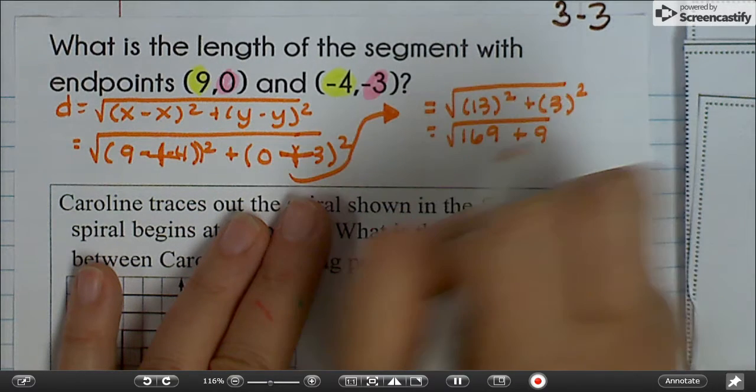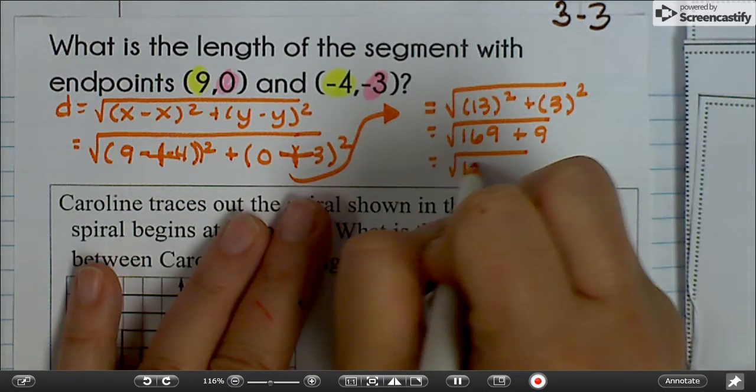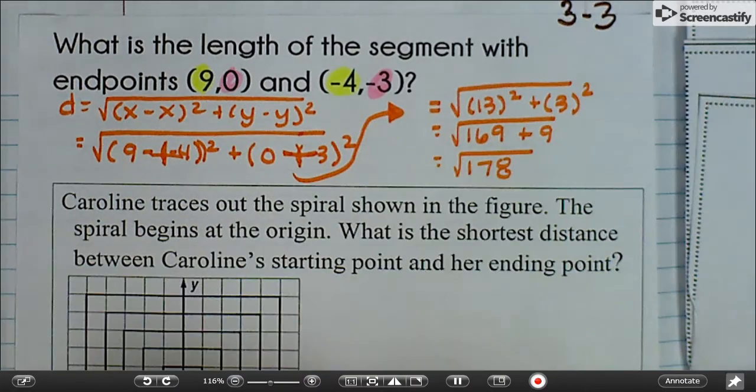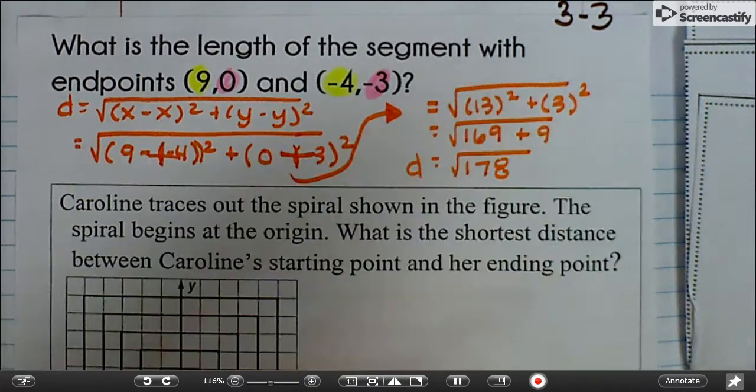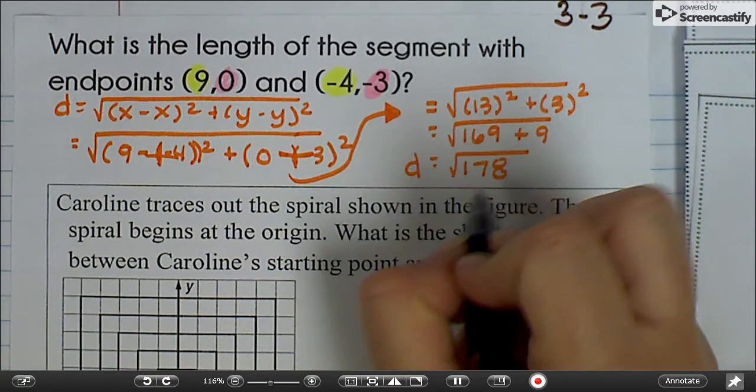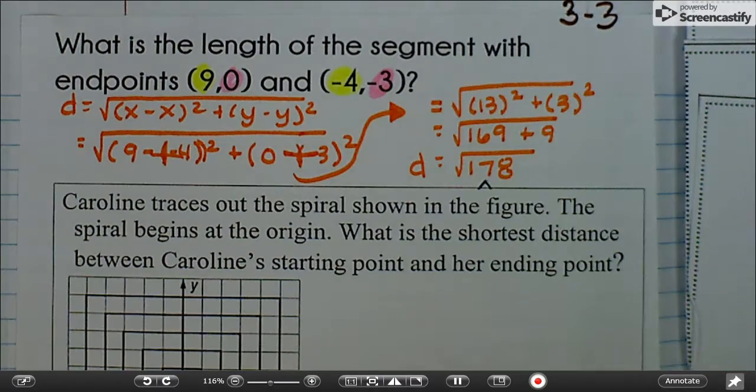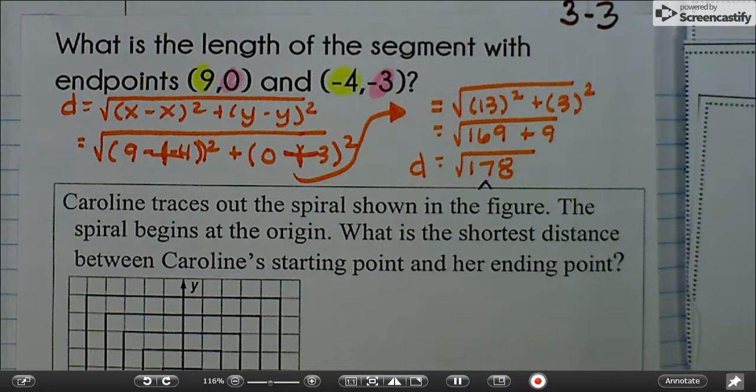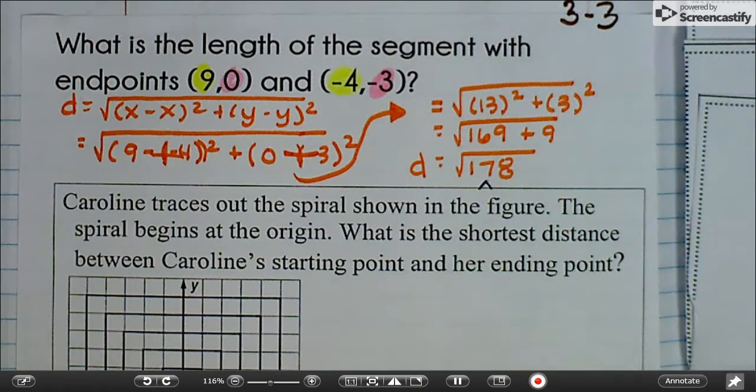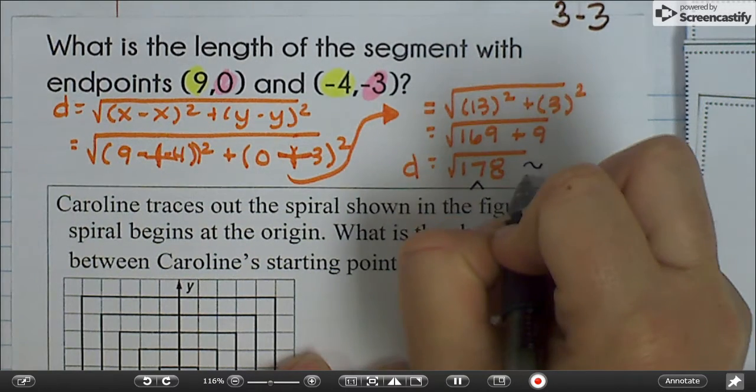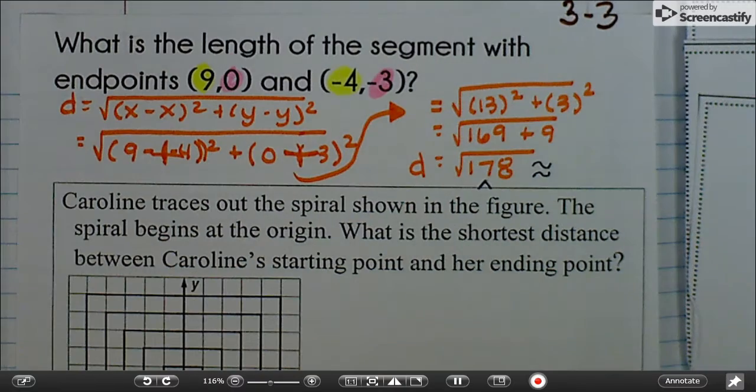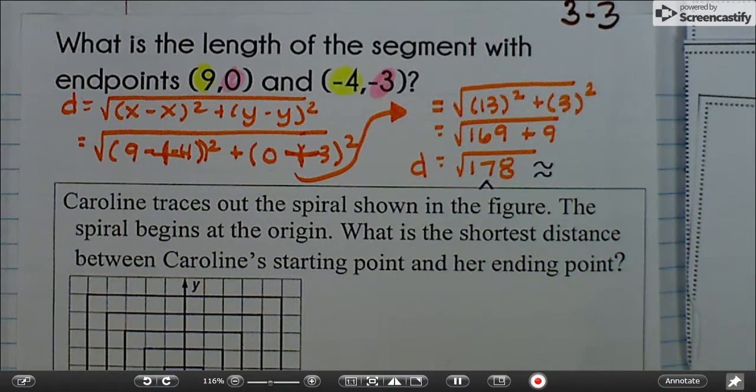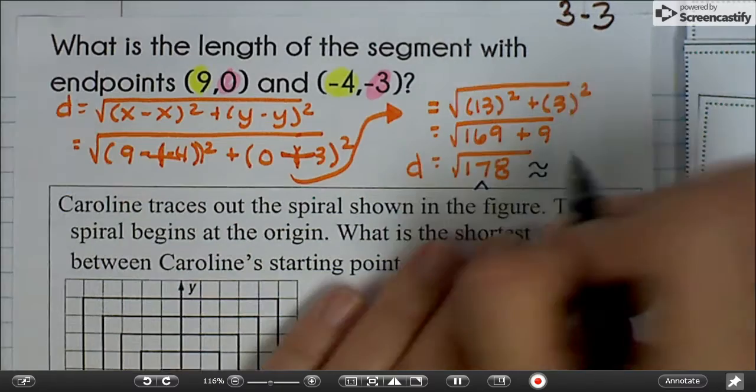So we have 13 squared plus 3 squared. 169 plus 9 equals the square root of 178. We can check to see if this is in simplest radical form. And it is in simplest radical form. So we just want the decimal approximation, which is about 13.3.